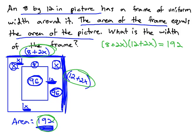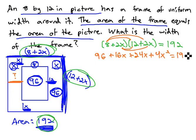We now have a problem we can solve to figure out what is the width of that frame. We can start solving by foiling. 8 times 12 is 96, plus 16x, plus 24x, plus 4x squared, equals 192.